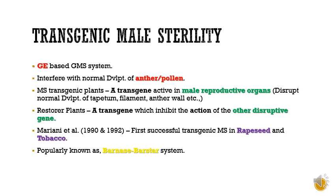In the case of transgenic male sterile plants, a transgene is inserted which is active in the male reproductive organ and disturbs the normal development of tapetum, filament, anther, etc. Whereas in the case of the restorer plant, another transgene is present which inhibits the action of the disruptive gene.